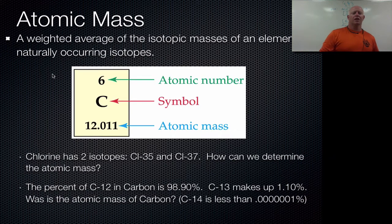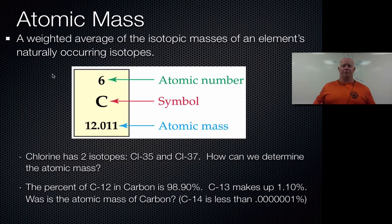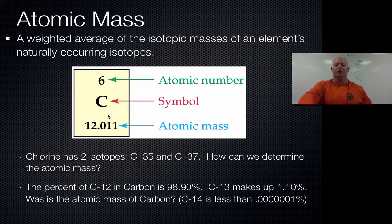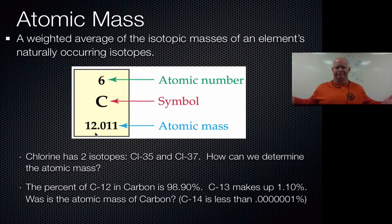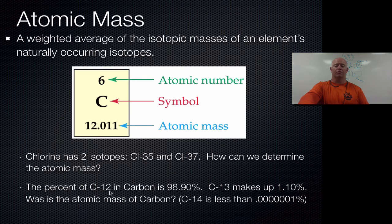If we take a look at the periodic table, we'll notice that we always have this second number. That second number is very useful for us because it takes those different isotopes that we have in nature and it combines them together and gives us a weighted average. Within carbon-12, if you notice the average isn't 13, so it's not 12 plus 13 plus 14 divided by three. That's not how it works.